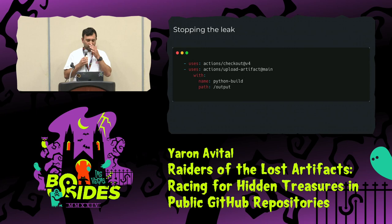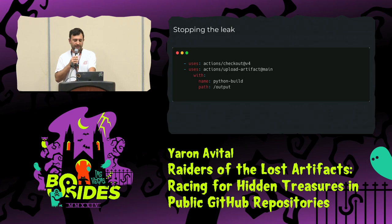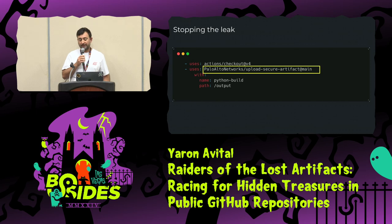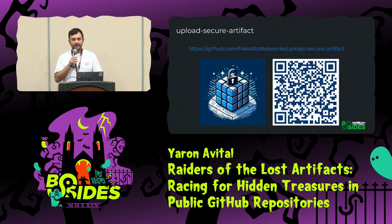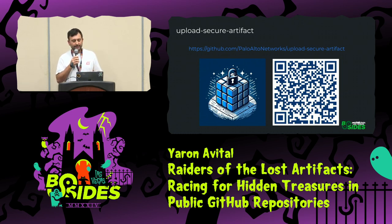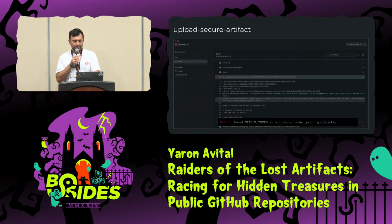Now the good news: all you have to do to mitigate this attack is change one line of code. Instead of using the original Upload Artifact action, you can use a tool I wrote called 'Upload Secure Artifact.' What I did is integrate a layer of secret scanning inside the upload process. If it finds any secrets being uploaded, it will block the upload and fail the pipeline. You can try it — it's free. This is how it looks: found GitHub token, fails the pipeline.